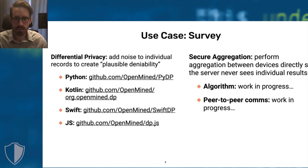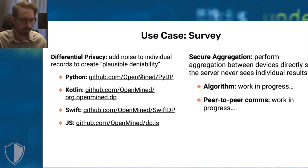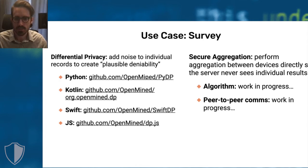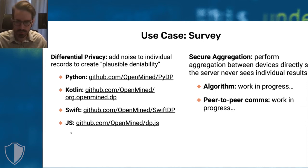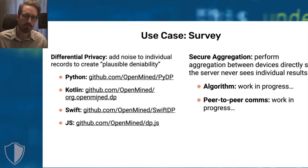At first it might seem like adding noise damages your statistics, and that's true. But if you average over enough people — a thousand, 10,000 — the noise you're adding will cancel out and you'll still end up on average getting the same result. Differential privacy can be an exceptionally useful way to make it so that you never have to handle the true raw records of your population, while still gaining useful insights about the health and welfare of that population.